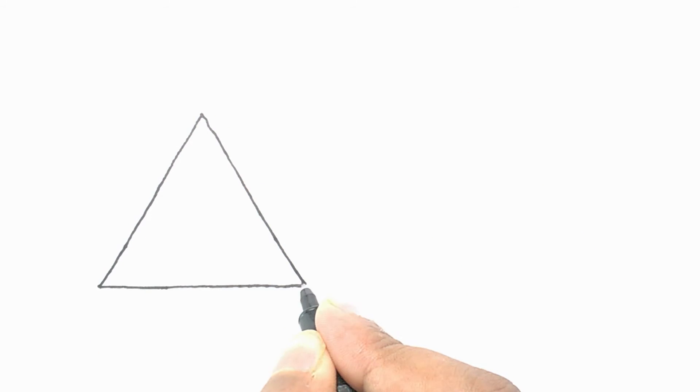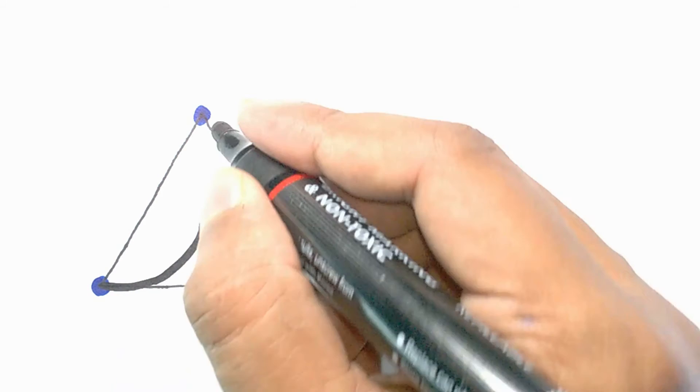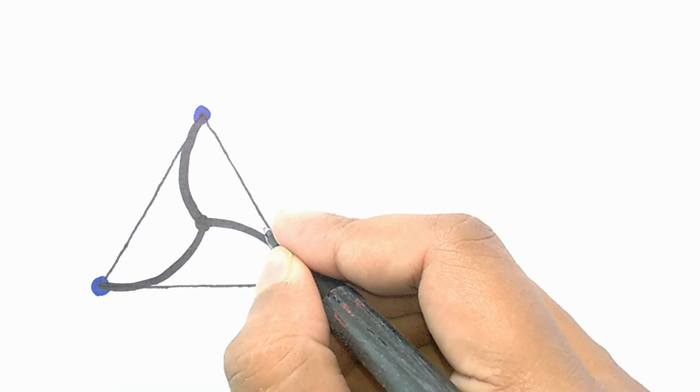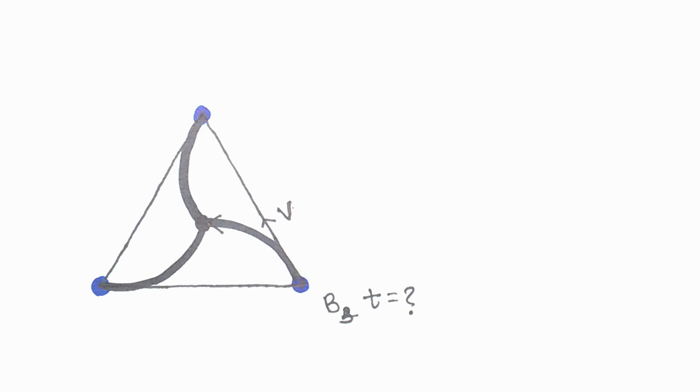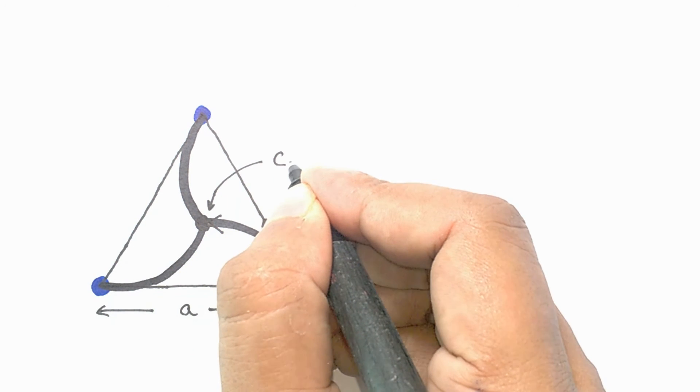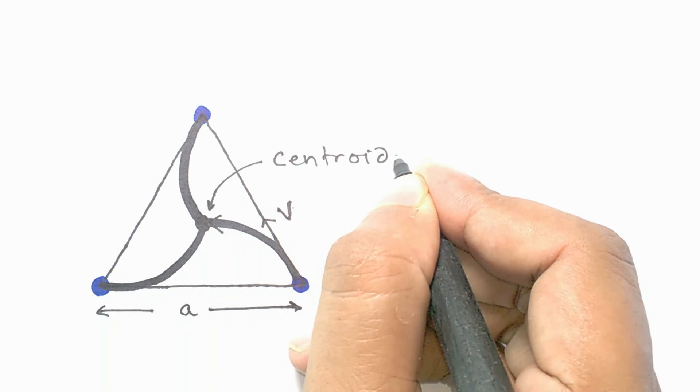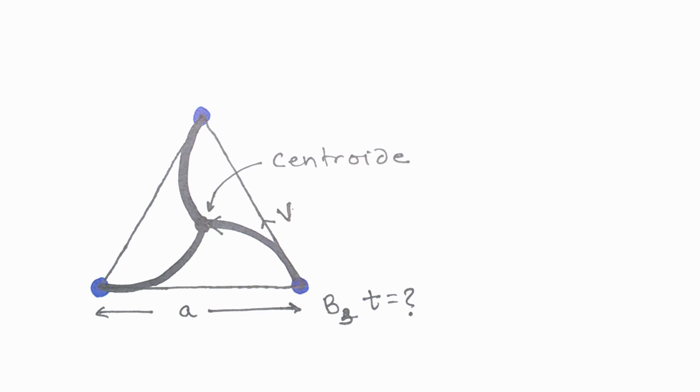So what we have to do here is to find the time any of the particles will take to reach the centroid. So let us take the third body. What do we have? We have the velocity, we have the length of one of the sides of the triangle, and we know where the point is where the body is going to end up.